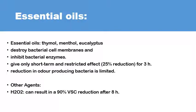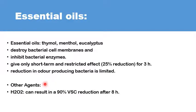Other active ingredients include essential oils such as thymol, menthol, or eucalyptus. They can destroy the bacterial cell wall and inhibit some bacterial enzymes, giving a fresh odor to the breath. However, they can only work for short periods — about three hours — producing only about 25% reduction in volatile sulfur compounds activity. Other less used agents include hydrogen peroxide, which is claimed to produce as much as 90% reduction in volatile sulfur compounds production for up to eight hours.